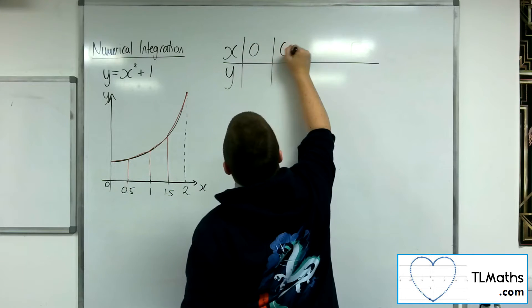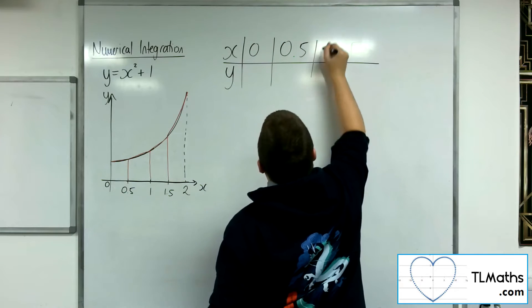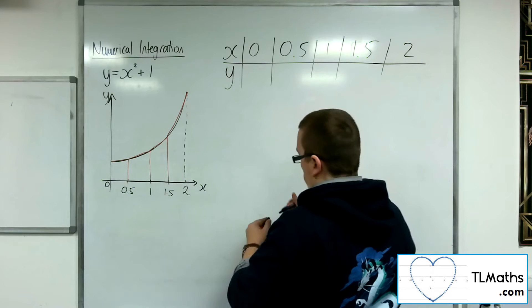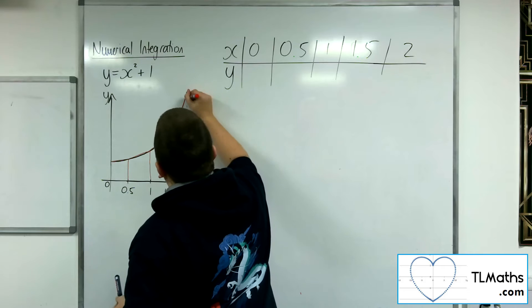So 0, 0.5, 1, 1.5, 2. Because I need the end points of my trapeziums.